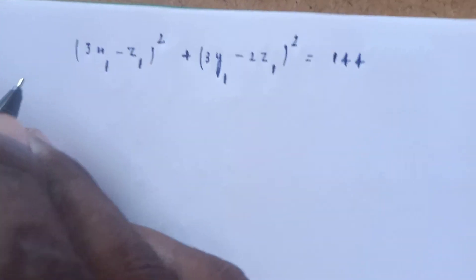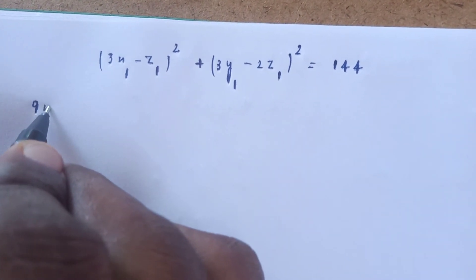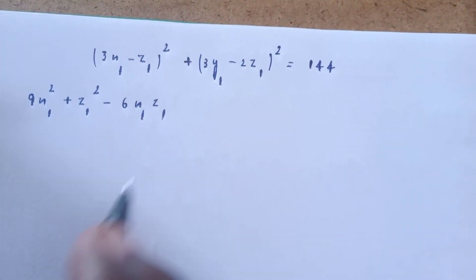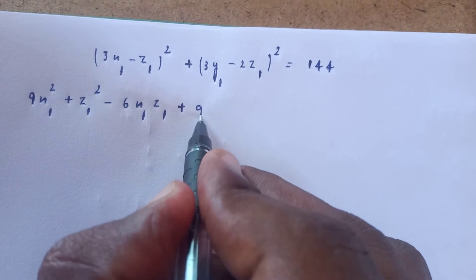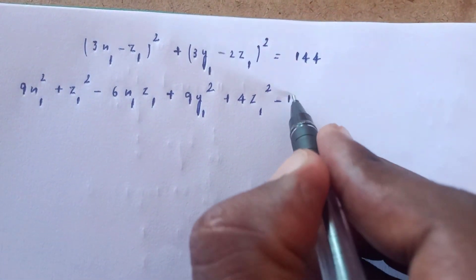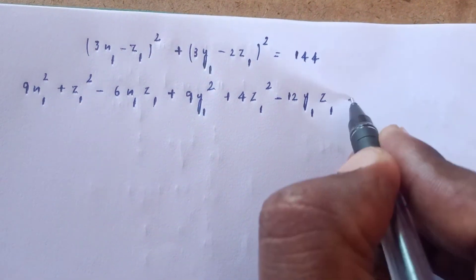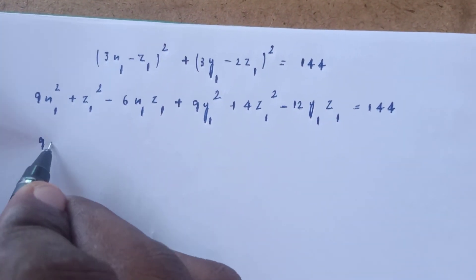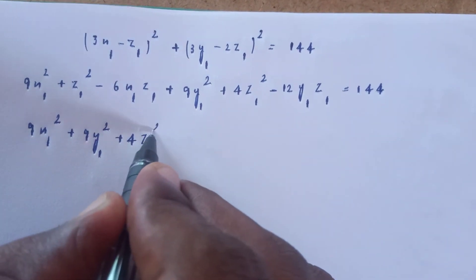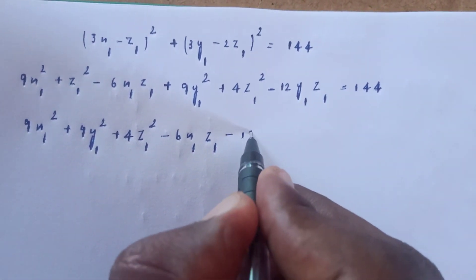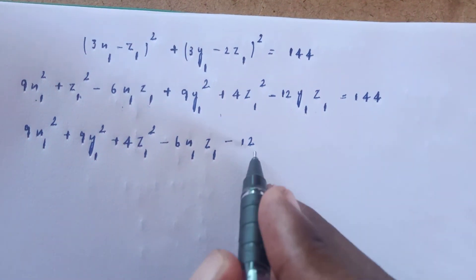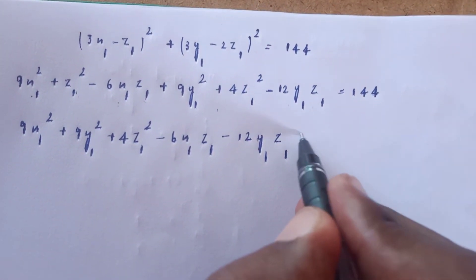Expanding: 9x₁² + z₁² - 6x₁z₁ + 9y₁² + 4z₁² - 12y₁z₁ = 144. Simplifying: 9x₁² + 9y₁² + 4z₁² - 6x₁z₁ - 12y₁z₁ = 144.